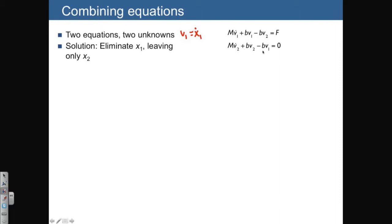The second equation is helpful because we can already move v1 over to the right, so we get mv2 dot plus bv2 is equal to bv1. Solve for v1 and we get m over b v2 dot plus v2. So we have one equation where we can immediately solve for v1. We also want v1 dot, which is just the derivative of that.